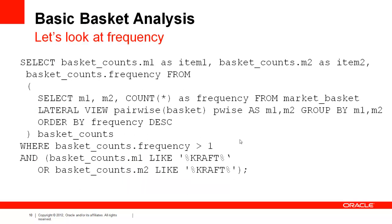Now that we have our pairwise function, we can begin to compute frequency on our shopping baskets. However, the lateral view forces us to write a more complicated query than we might like. In a subquery, we generate the pairs and their counts, while in the primary query we conduct the filtering. Of course, we could do this the opposite way — first filtering on the brand name and then constructing our frequency counts.